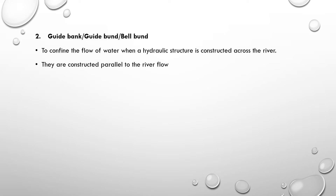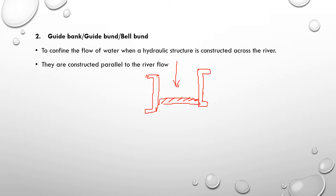To confine the flow of water, a hydraulic structure is constructed across the river. The second type is the guide bank — it confines the flow of water. The structure is parallel to the river flow.